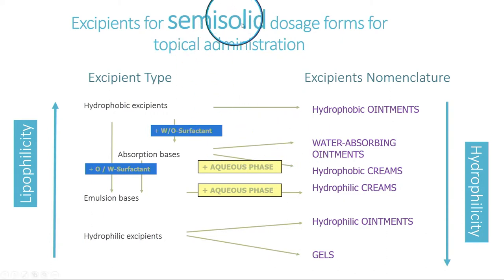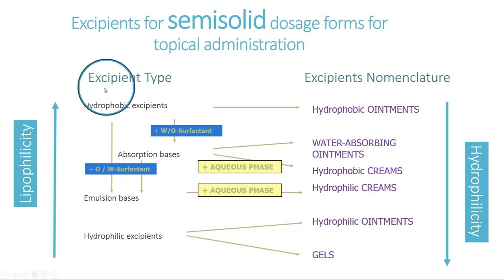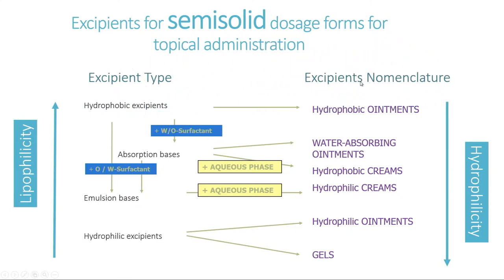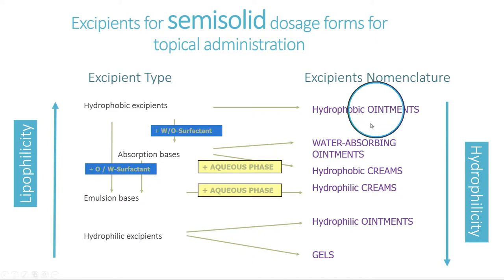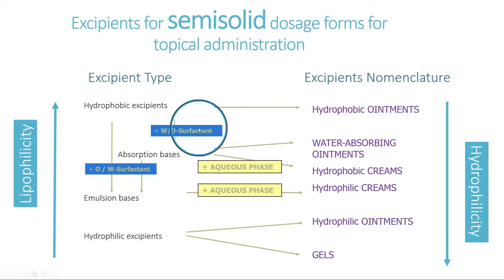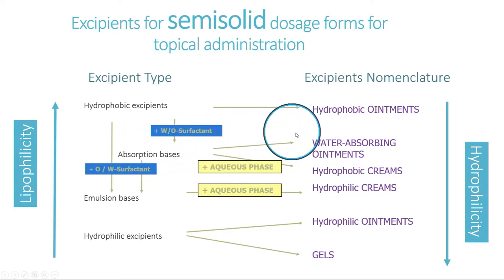Regarding semi-solid dosage forms for topical administration, we normally follow this schema. In the left column we have the excipient type and in the right column the excipient nomenclature. Starting from the highest lipophilicity, the most hydrophobic excipients used directly with an API onto the skin are called hydrophobic ointments. Including a water-in-oil surfactant increases hydrophilicity to produce an absorption base.